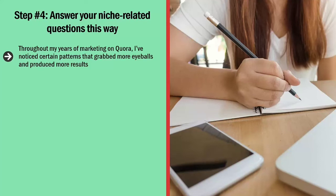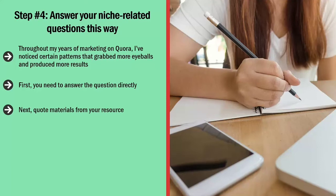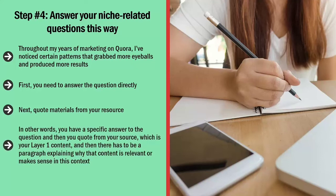Step number four: answer your niche-related questions following this pattern. First, answer the question directly — read it several times, understand exactly what's being asked, and consider any limits to the answer. Next, quote materials from your resource. If you're dropping a link to your layer one content, quote a block of text from that content and explain why it's relevant. In other words, provide a specific answer to the question, quote from your source, and include a paragraph explaining why that content is relevant in this context.